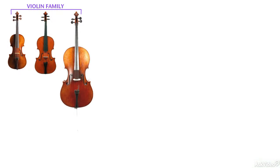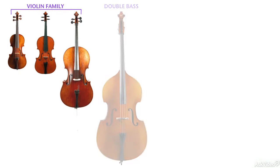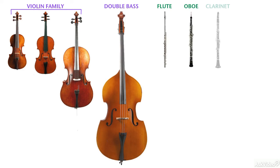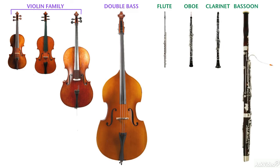Nearly every member of the string section is an instrument from the violin family, plus the double basses from the viol family. But the wind section is composed of four distinct families of instruments: the flutes, the oboes, the clarinets, and the bassoons. In order to study the winds in a comprehensive way, each of these families must be explored in detail.